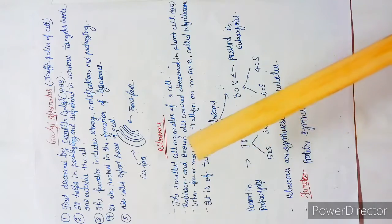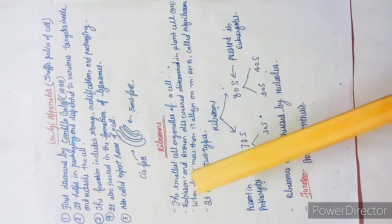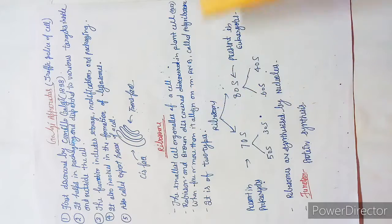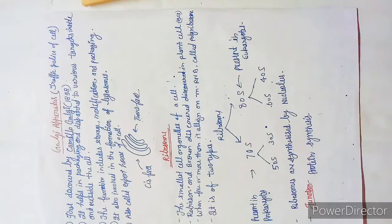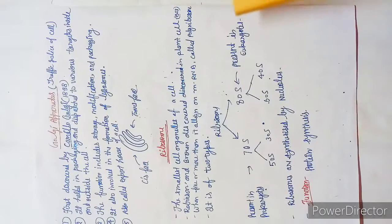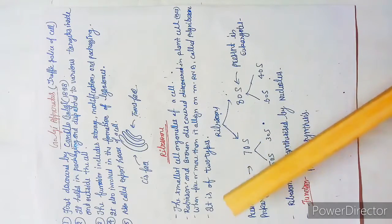Robinson is the main person but we always take the name with the assistant also. So Robinson and Brown discovered it in plants in 1953, and who discovered it in animal cells? Palade discovered it in 1955.